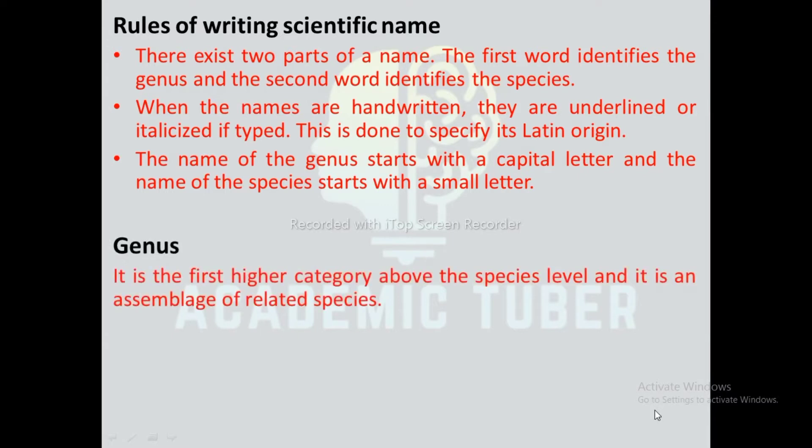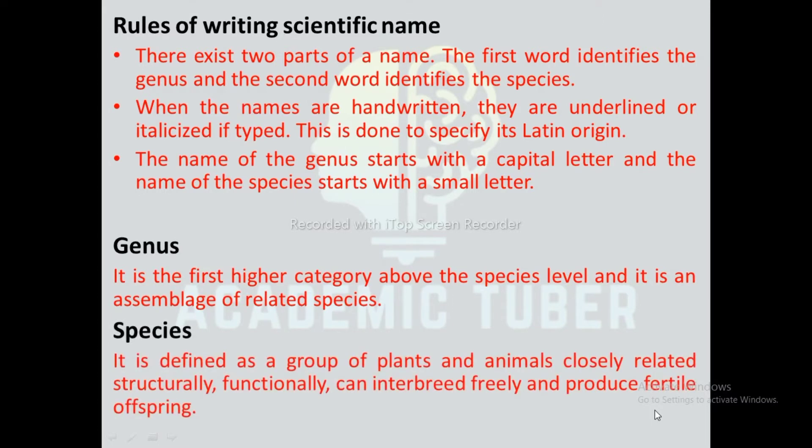Genus: It is the first higher category above the species level and it is an assemblage of related species. Species: It is defined as a group of plants and animals, closely related structurally and functionally, that can interbreed freely and produce fertile offspring.